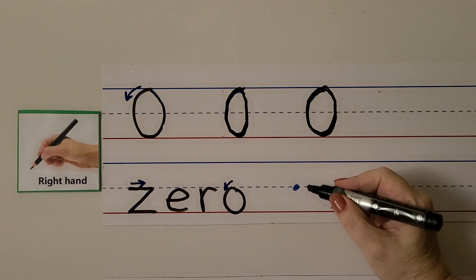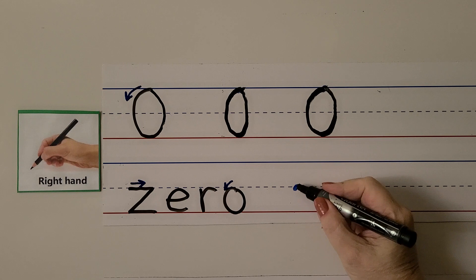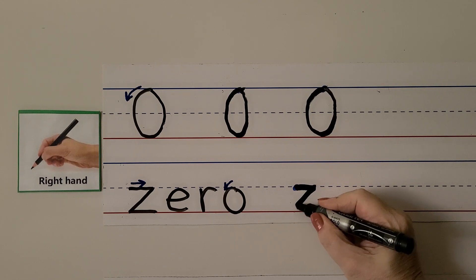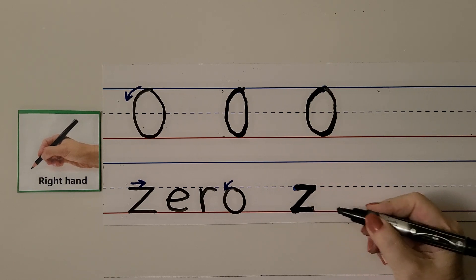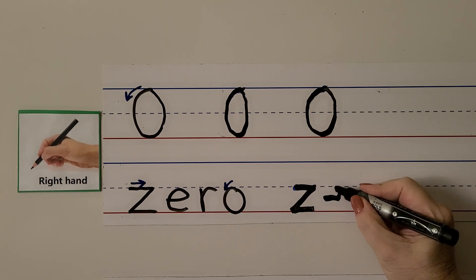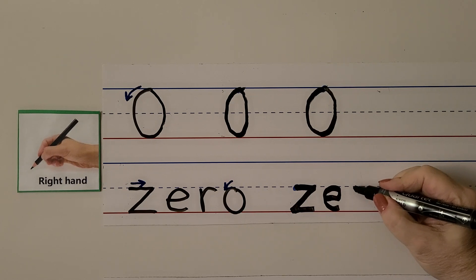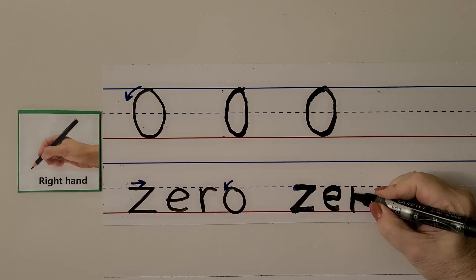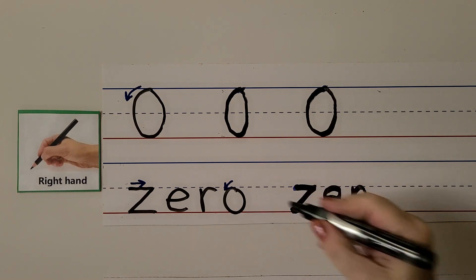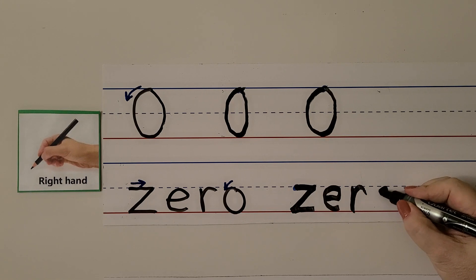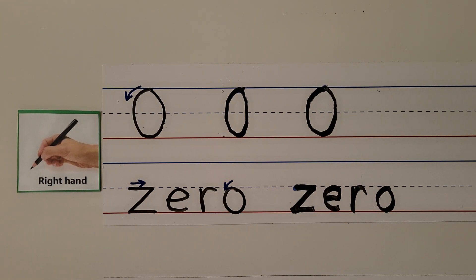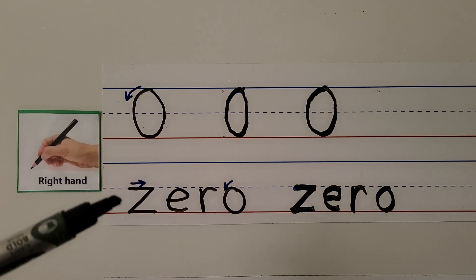When we write the number zero, we start here on this middle dotted line. For the lowercase z, we come towards our hand, then down at a slant away from our hand, then back towards our hand — that's the z. For the e, we come towards our hand and go up and around. For the r, we start here, come down and bounce around and stop right there. And for the lowercase o, we make it just like we did the zero, except we start here and come around. We wrote the number zero and the word zero.